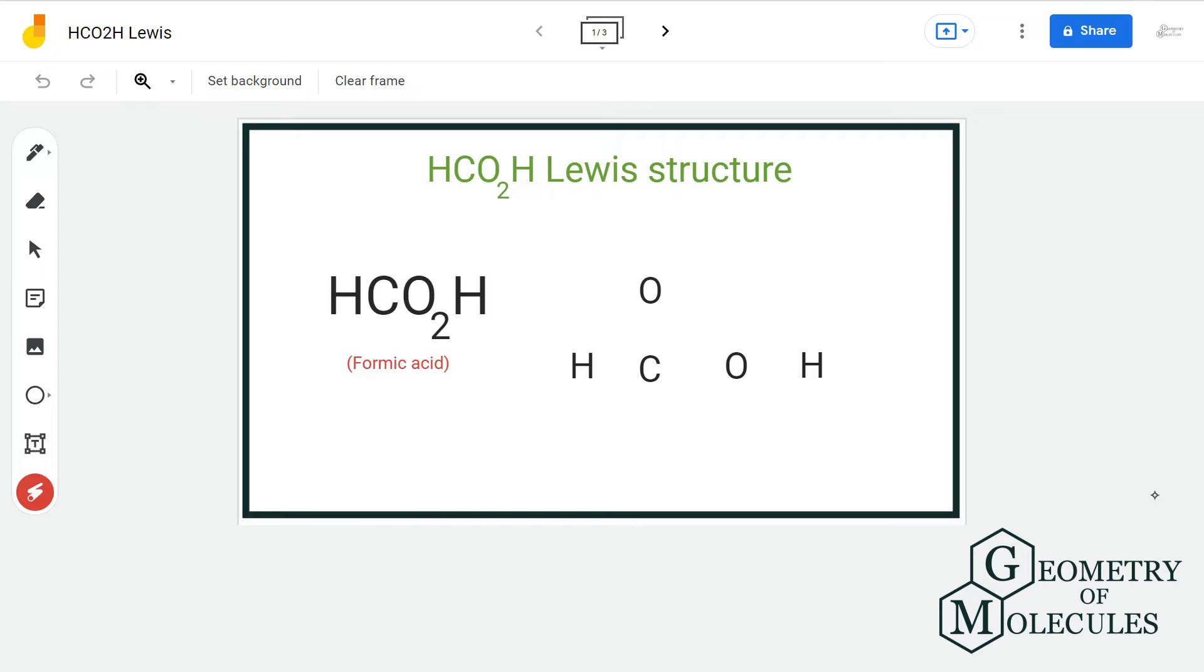Hello guys, welcome back to our channel. In this video, we are going to help you determine the Lewis structure of HCO2H. It's a chemical formula of formic acid.